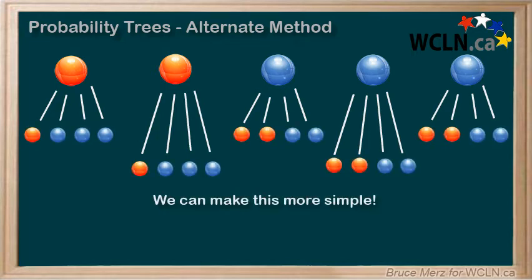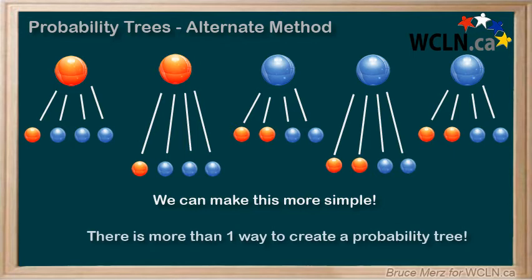But what if I told you we could make this a bit easier and do an alternate version of a probability tree? Both of these will be correct, by the way, but many of you will find this second version much easier. Here's what I mean.